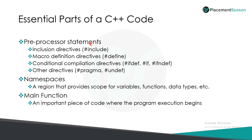Macro definition directive defines any macros that are required during the execution of a program. Conditional compilation directives act like flow control statements throughout the program, and we have some other directives like pragma and undef for doing their own specific functions. Pragma directive is used for defining a pragma and undef directive is used for undefining a defined function or a macro.